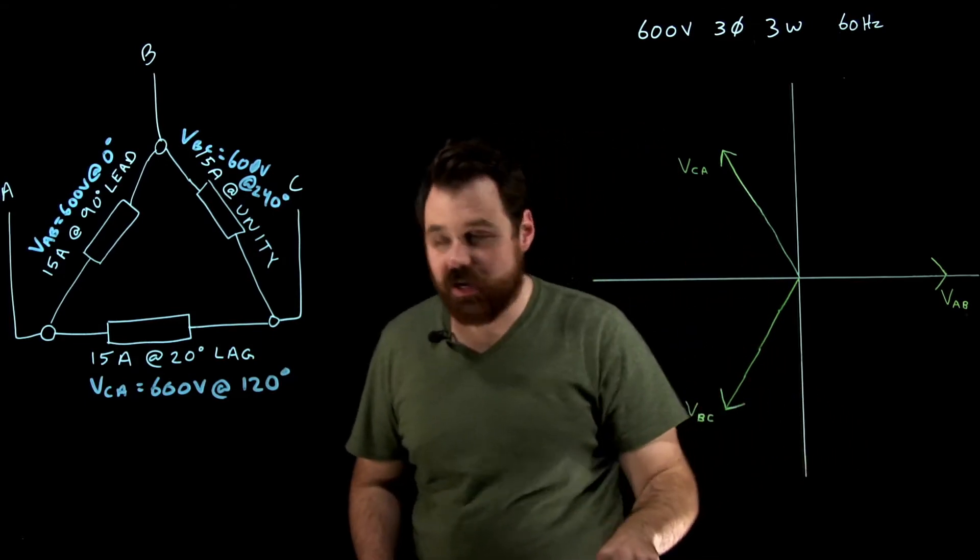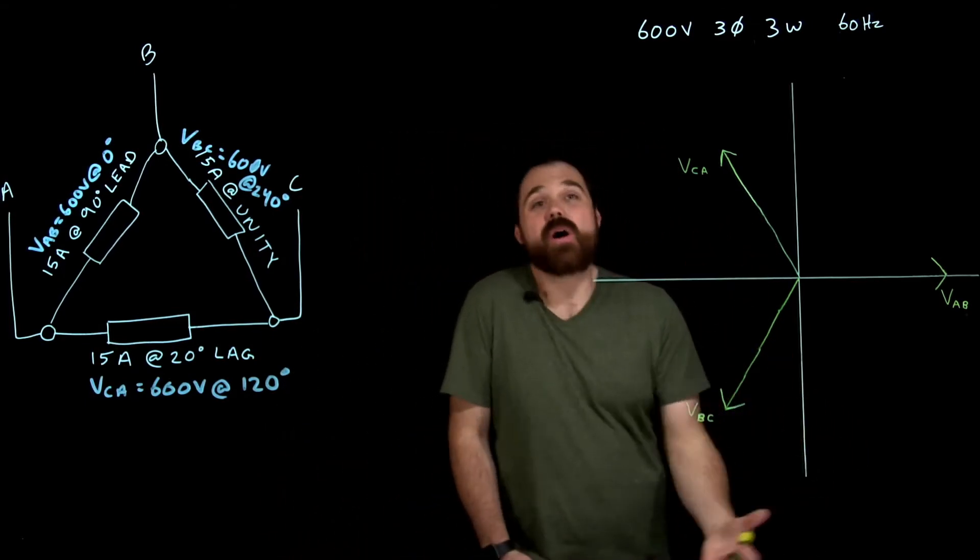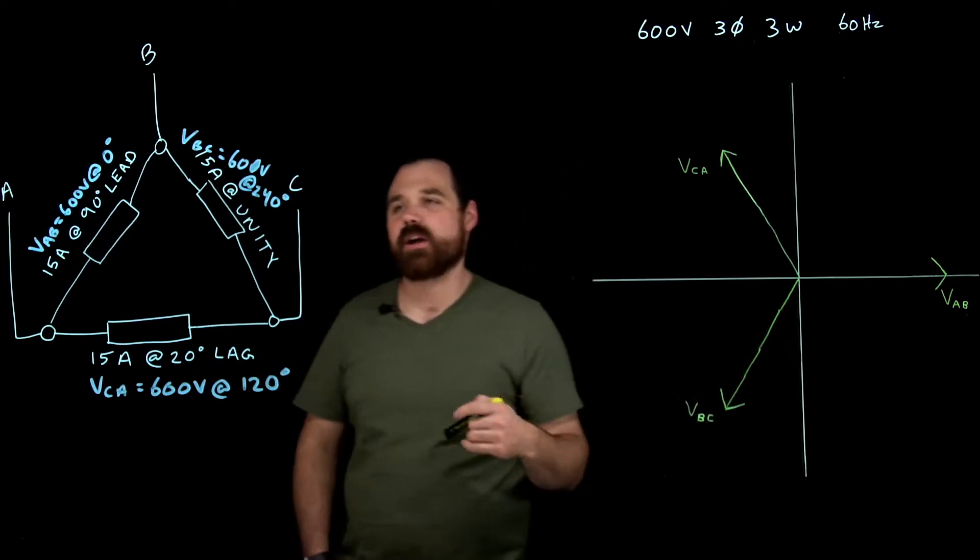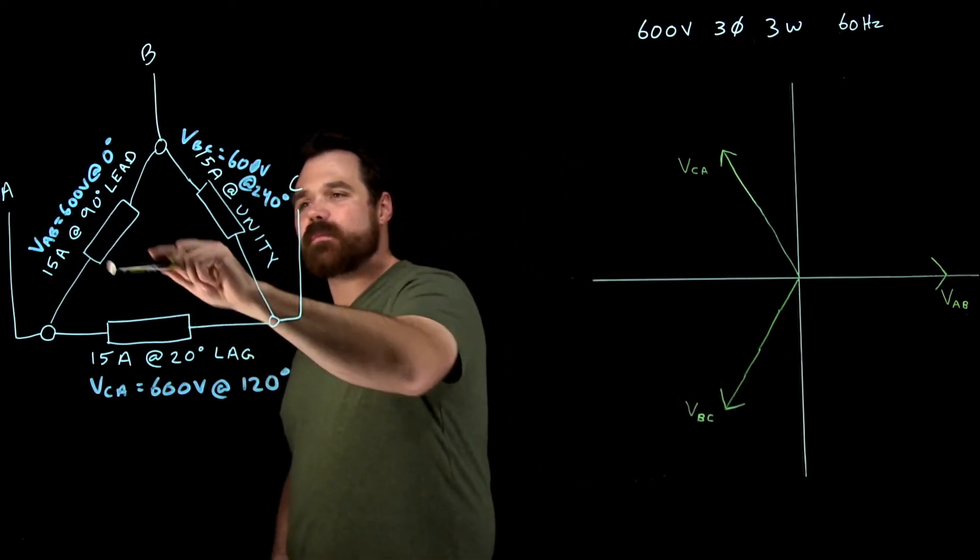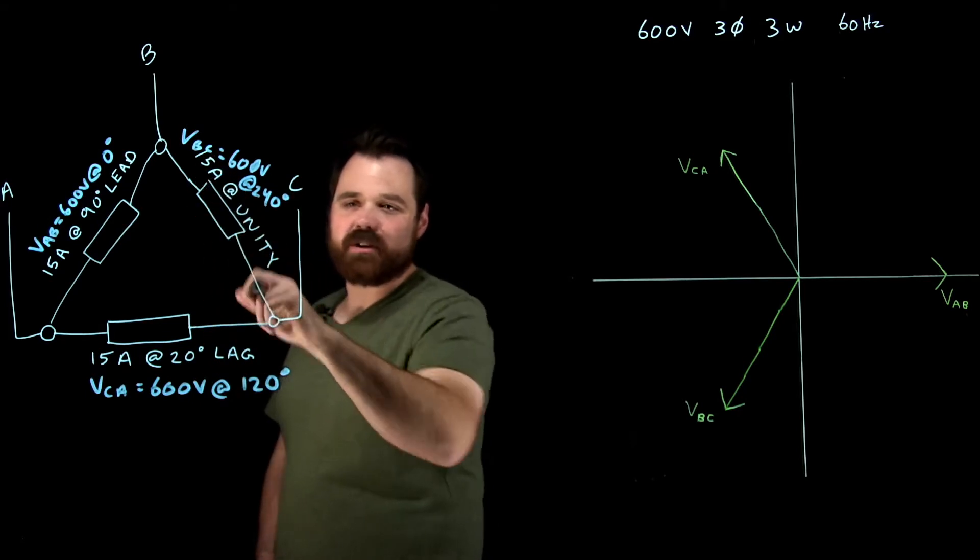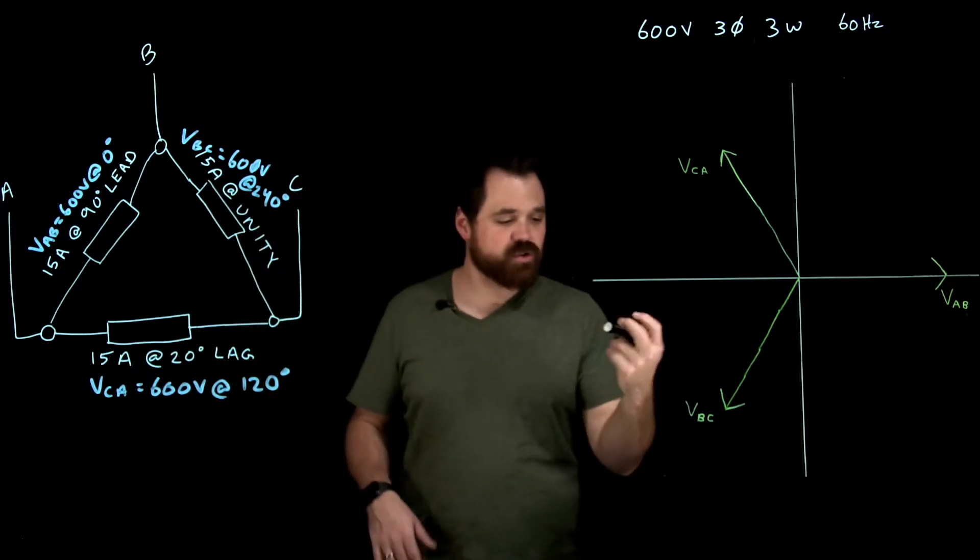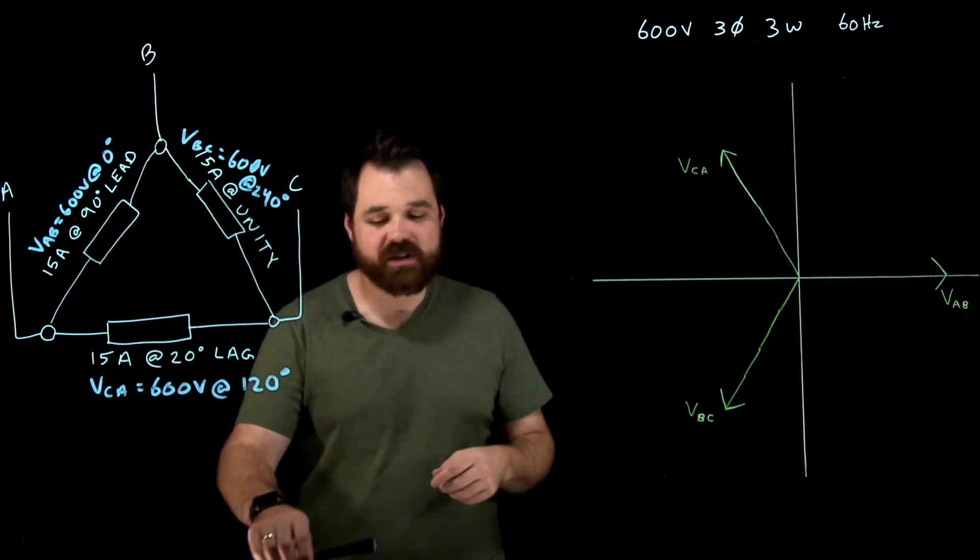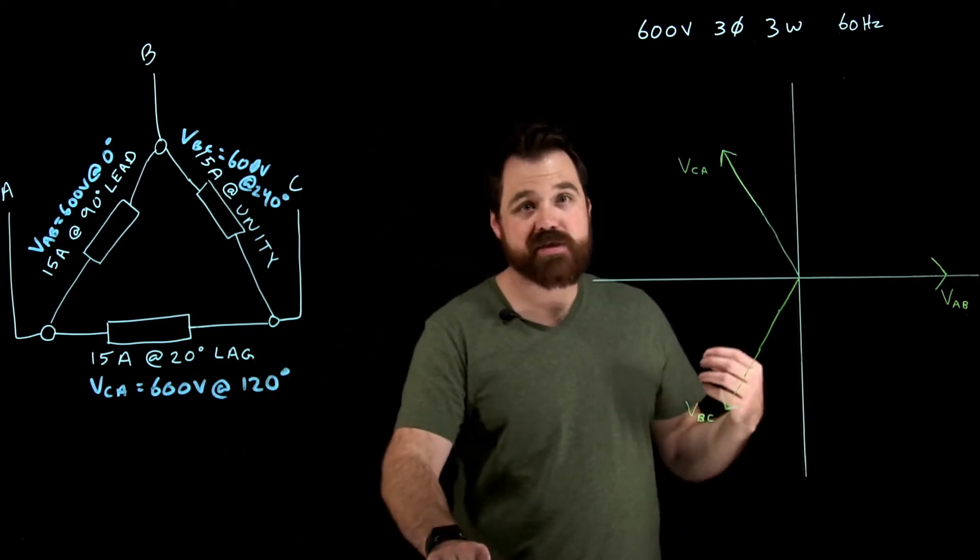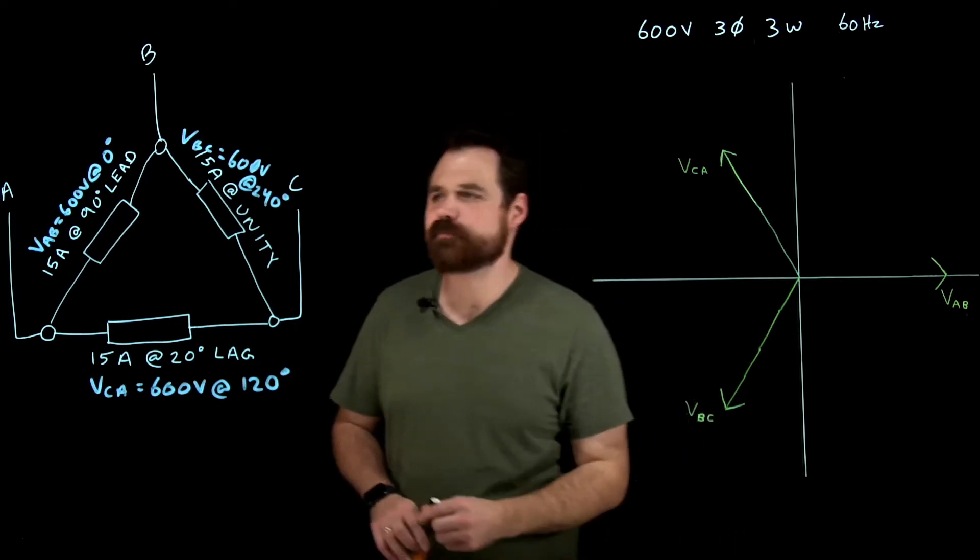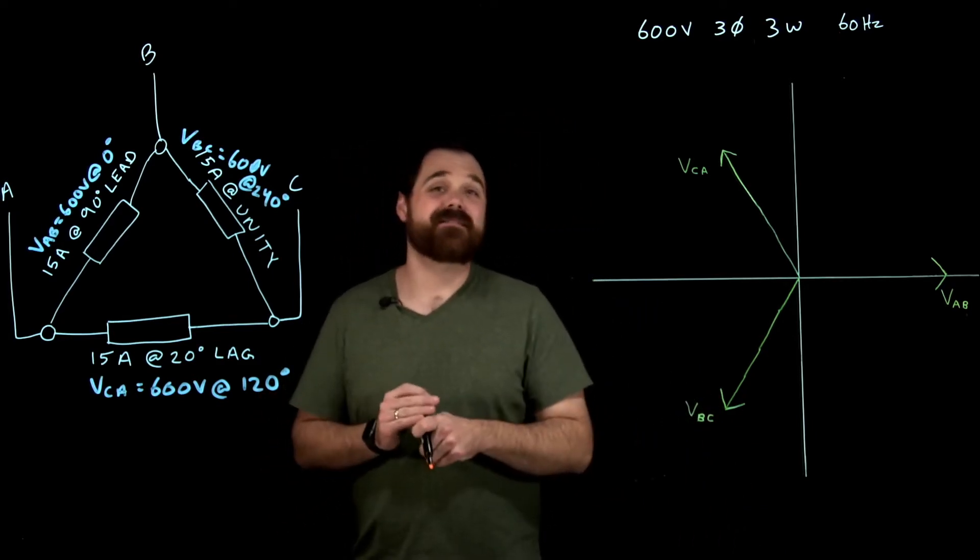So that's how we lay out our voltage phasors on our phasor diagram. Awesome. So now what I want to look at, we know all our phase currents here. We don't have to calculate them. We're told 15 amps at a 90 degree lead, 15 amps at unity, and 15 amps at a 20 degree lag. So what we're going to do is we're going to talk about those phase currents, and then we are going to plot them on my phasor diagram.